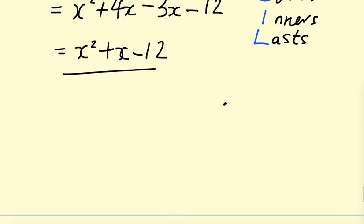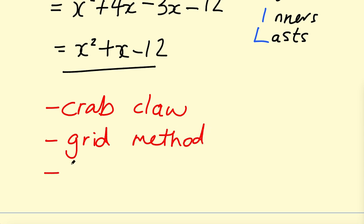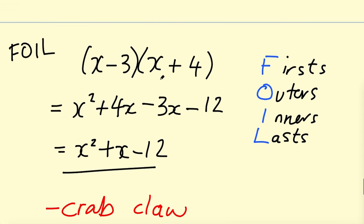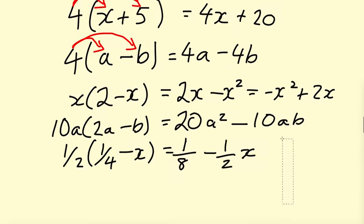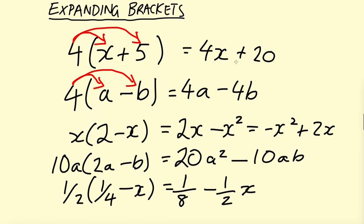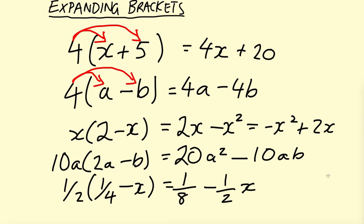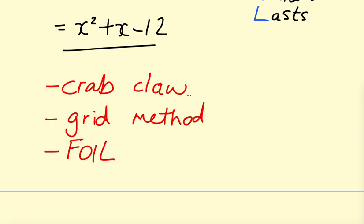So let's outline those three methods again: the Crab Claw, the Grid method, and FOIL. I'd suggest just choosing a method that makes sense to you and mastering that. Keep in mind that even though these are simple examples of double brackets with no fractions or extra unknowns, these methods still work even with more complicated expressions. I hope that's been helpful — let me know which method you prefer or if anything isn't quite making sense. See you next time!